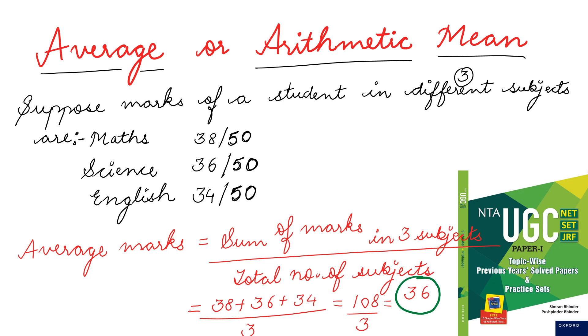So, I have taken an example over here. Suppose marks of a student in 3 different subjects are given. In maths, one student has scored 38 marks out of 50. In Science, 36 marks out of 50. In English, 34 marks out of 50. If your parents or student wants to know the average marks in 3 different subjects, then the importance of this topic arises. That is averages. So, we can calculate the average marks. The basic formula is sum of marks in 3 subjects, total, divided by total number of subjects.